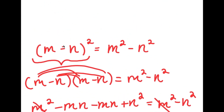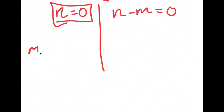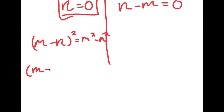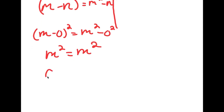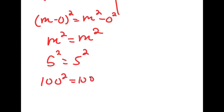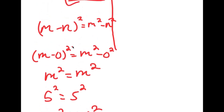Going back to our original equation, we have m minus n squared is equal to m squared minus n squared. If n equals 0, I get m minus 0 squared is equal to m squared minus 0 squared, which turns into m squared is equal to m squared. This means m can really equal any number. If m equals 5, then I have 5 squared is equal to 5 squared. If m equals 100, I get 100 squared is equal to 100 squared. So m can equal any number if n is 0.